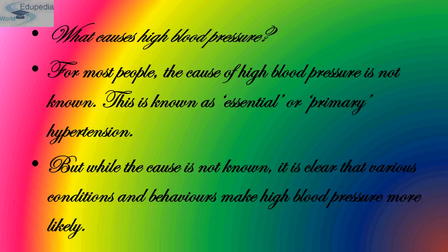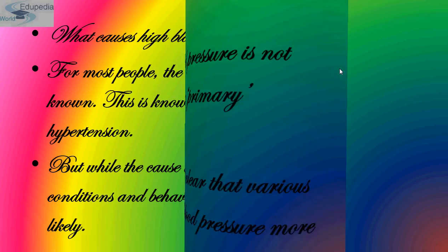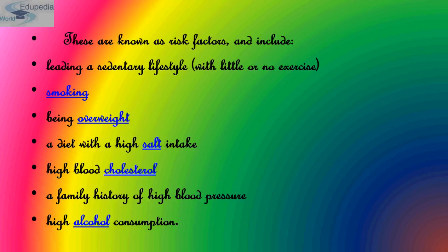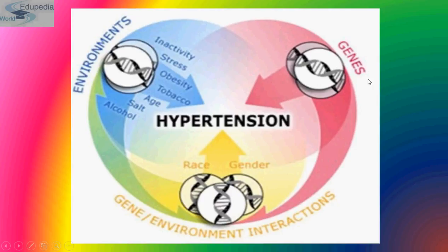For most people, the cause of high blood pressure is not known — this is known as essential or primary hypertension. Various conditions and behaviors make it more likely. Known risk factors include heavy smoking, being overweight, a diet with high salt intake, family history of high blood pressure, high alcohol consumption, race, gender, genes, and environmental factors such as inactivity, stress, obesity, tobacco, age, and salt.